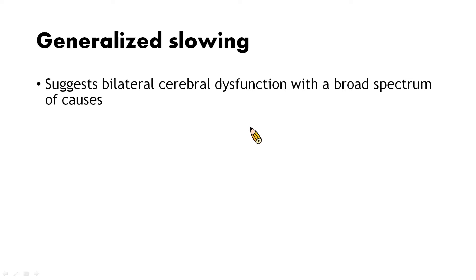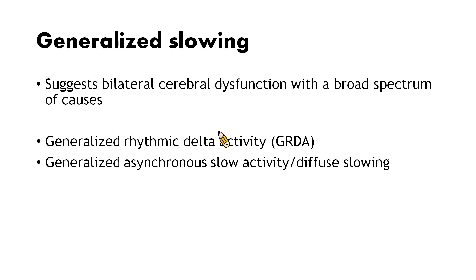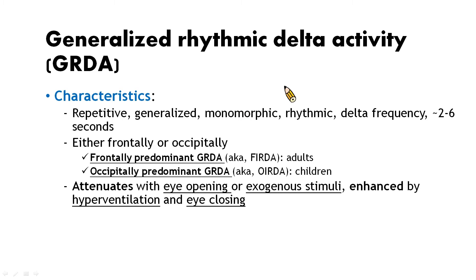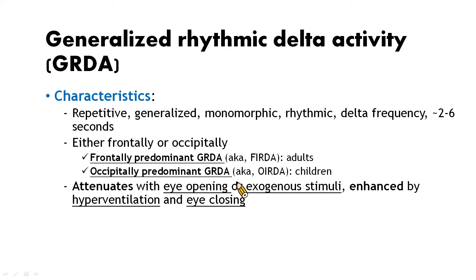Next, we talk about generalized slowing, which suggests bilateral cerebral dysfunction with a broad spectrum of causes. This includes generalized rhythmic delta activity (GRDA) and generalized asynchronous slow activity or diffuse slowing. GRDA is characterized by repetitive, generalized monomorphic rhythmic delta-range waves with duration around 2–6 seconds. They can be either frontally or occipitally predominant. Frontally predominant GRDA is also known as FIRDA, seen in adults. Occipitally predominant GRDA, also known as ERDA, is more commonly seen in children.